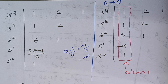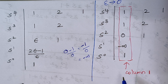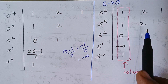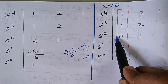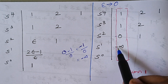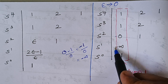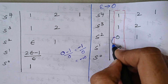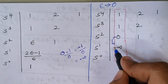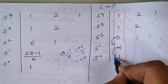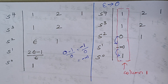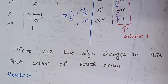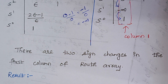Now look at the first column of the Routh array — are there any sign changes? Yes, there is a sign change. 0 is neutral; from neutral it changes to minus, which is the first sign change. Then from minus it changes back to plus — that is the second sign change. From neutral to minus and from minus to plus: totally two sign changes in the first column of the Routh array.